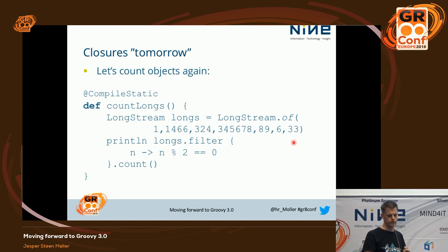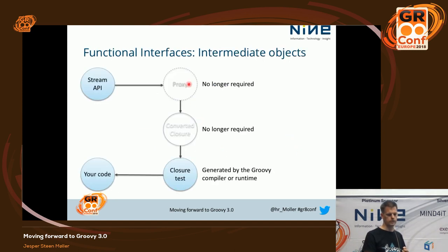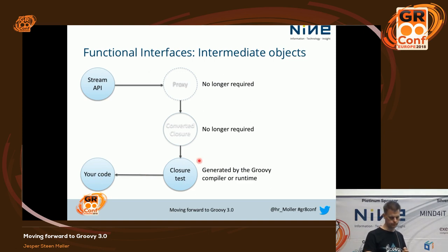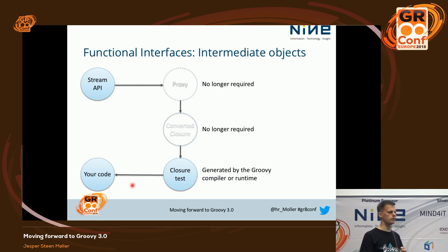So if we do the count again, we can basically get rid of these: the closure would implement the test method directly and call your code, just via a bridge version or something. The key point is that this code could be inlined very effectively by the runtime.